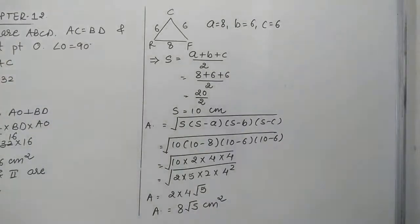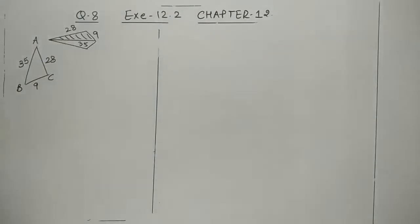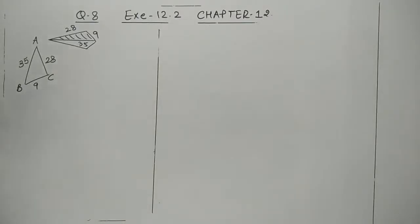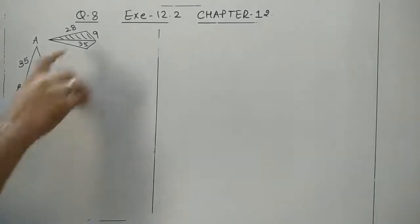So the area of triangle CRF, which is the base of this kite, is 8√5 centimeters square. Thus we have obtained the answer for question 7. Now let's look at the next question: a floral design on a floor is made of 16 triangular tiles with sides 9, 28, and 35. Find the cost of polishing the tiles at 50 paisa per centimeter square.